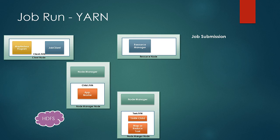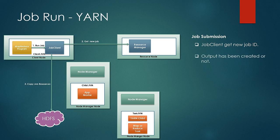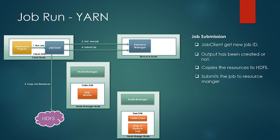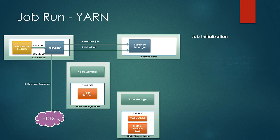Let us see the steps on how a job runs in the YARN framework. The first few steps are exactly the same as in classic MapReduce. The job gets submitted to the job client, and the job client requests a new application ID. After that, it checks if the output directory is already created — if it finds the output directory, it throws an error and stops. It then verifies the input directory, copies the resources to HDFS with very high replication, and finally submits the application to the resource manager.